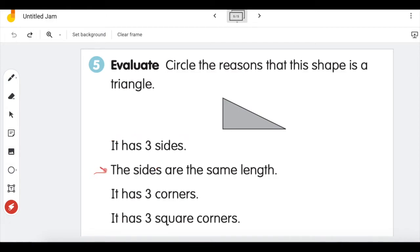The second one says it's a triangle because the sides are all the same length. Is that true? Do triangles have to have sides that are the same length? If it's true you can circle it and if it's not true leave it alone.